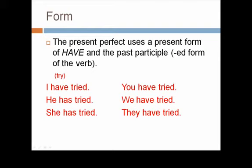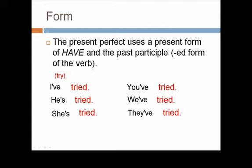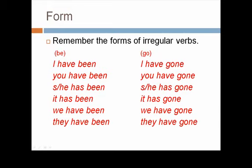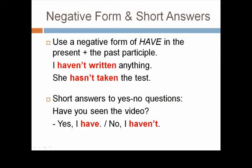Let's take a moment to review form. Remember that the present perfect uses a present form of the verb have, and then the past participle, which is usually the ED form of the verb. An example of a regular verb is try. Note that we often use contractions. You also need to remember the past participles of irregular verbs. For example, the past participle of BE is BEEN, and the past participle of GO is GONE. Take a look at all the forms for the different pronoun subjects. To form the negative, use a negative form of have in the present, and then add the past participle. For example, I haven't written anything. She hasn't taken the test.